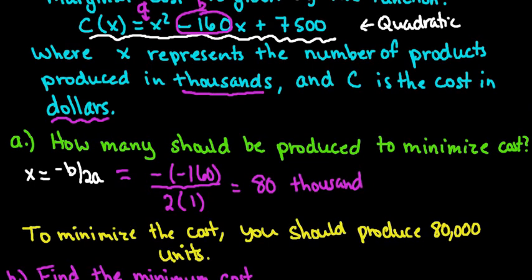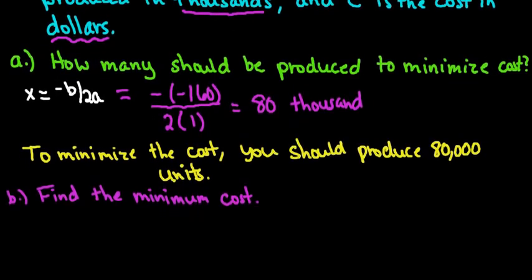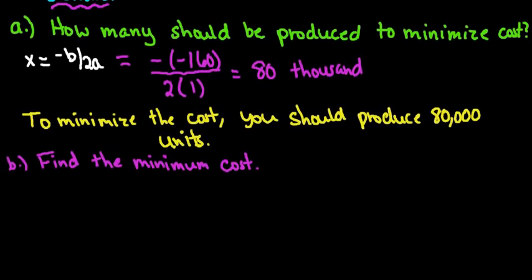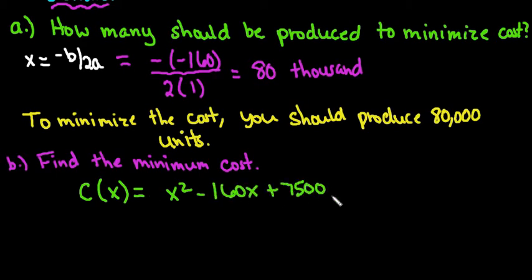For the next part, what it's going to ask us to do is to actually find the minimum cost. When you're finding the minimum cost, all that is saying is that we are going to use our cost function, which is C(x) = x² - 160x + 7500. I just wanted to rewrite it so you could see what it was. To find the minimum cost, all this is saying is to take and plug in this value that we found here in for x.